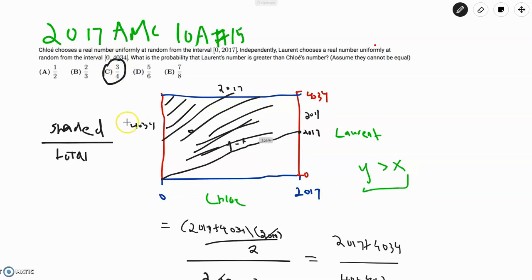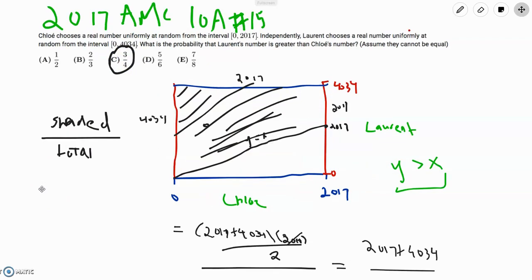So to recap what we did was, we noticed that there were infinite possibilities, so we have to find probability regions and find the ratio of areas instead of ratio of counts. So we just did that. Our condition was relatively simple, so we just graphed that, we found our desired region, we divided by the total, and we got our answer.